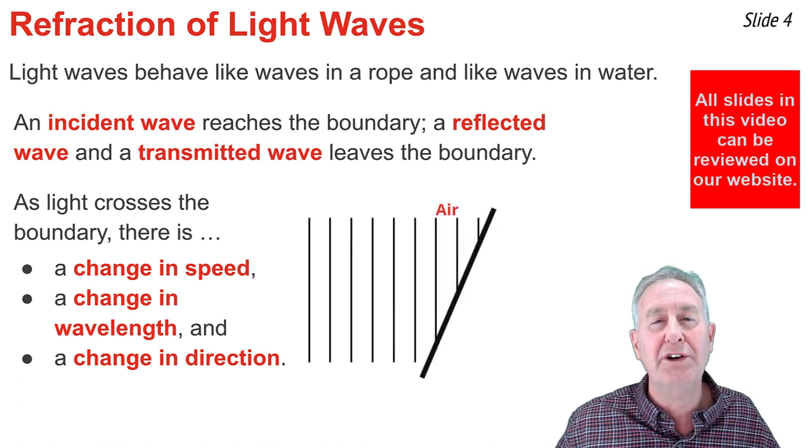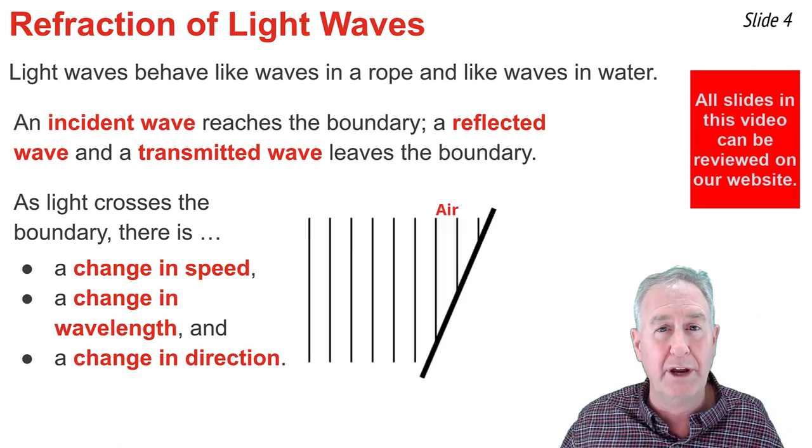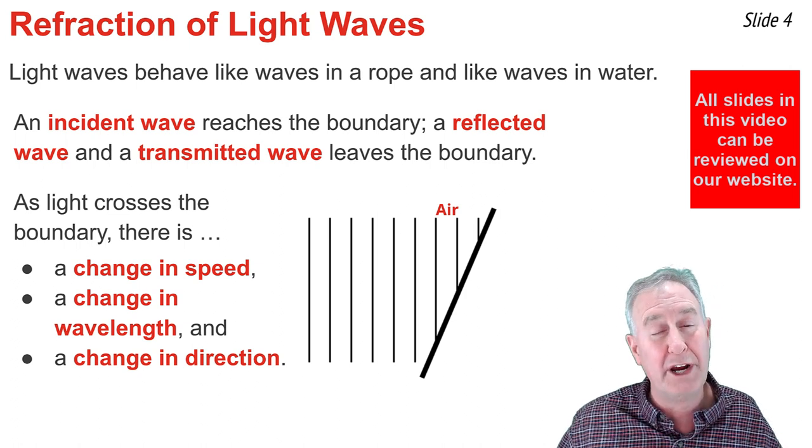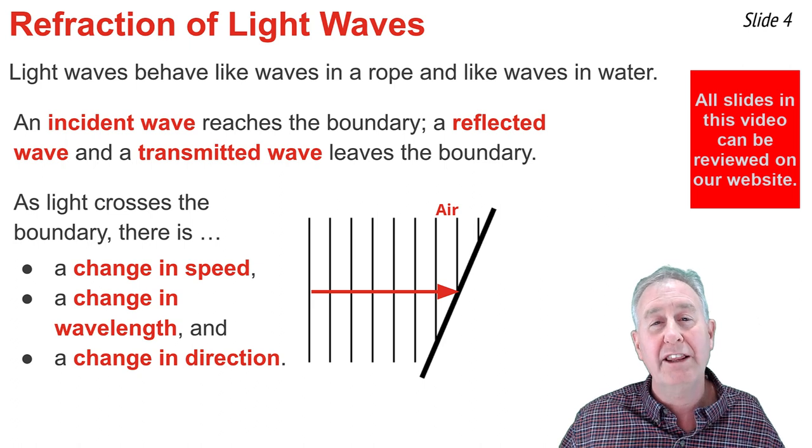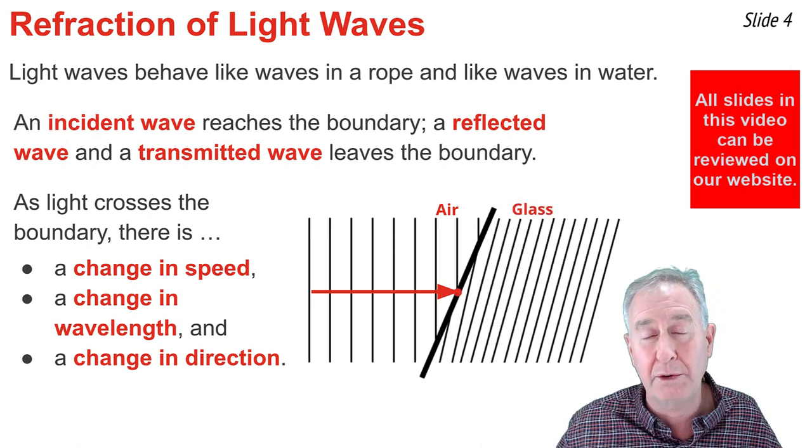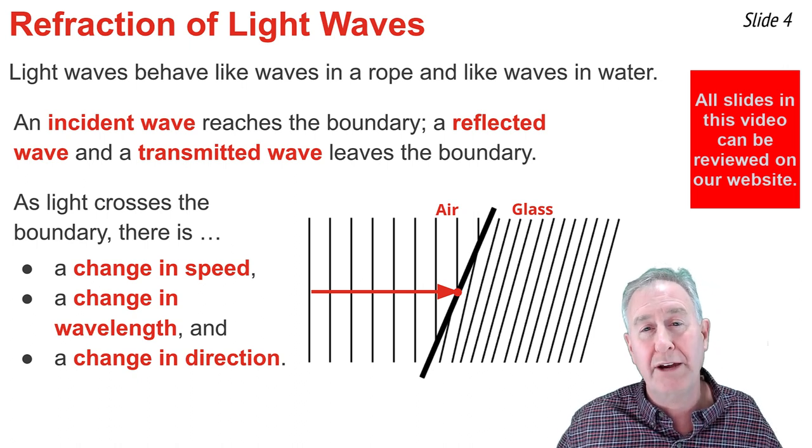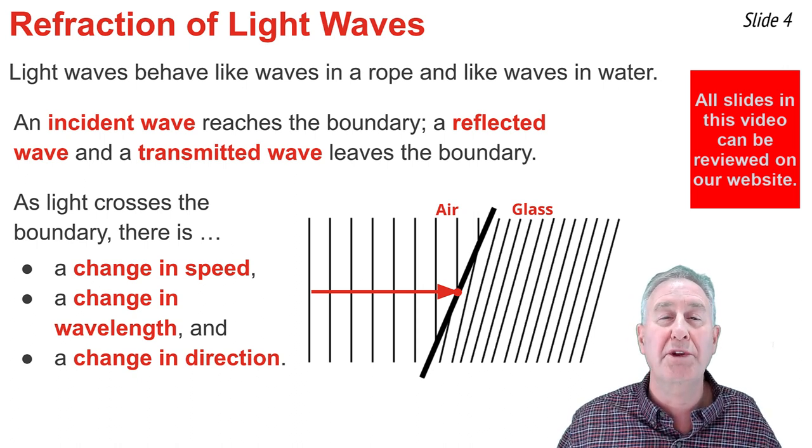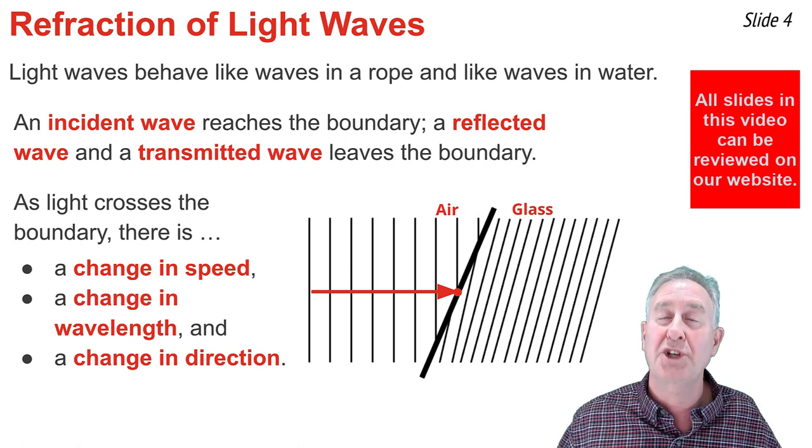As an example, consider light waves traveling through air. In the diagram, those wavefronts are represented by lines, and the direction that that wave is moving is represented by the red arrow. Let's suppose those light waves meet a boundary with glass, and when they do, they'll cross over or transmit across the boundary. They'll be traveling slower, and their wavefronts will thus be closer together. There has been a change in speed and a change in wavelength.